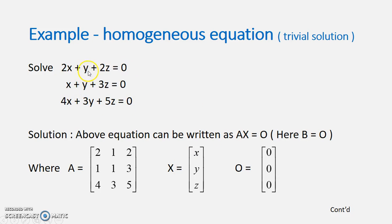See this is the equation given 2x + y + 2z = 0, x + y + 3z = 0, 4x + 3y + 5z = 0. This can be converted as a matrix equation AX = B. B I have written as 0 because it is a column matrix of 0.